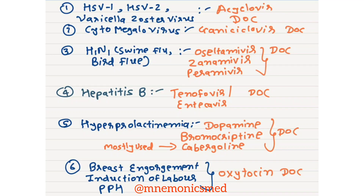For Cytomegalovirus, drug of choice is Ganciclovir. For H1N1 swine flu and bird flu, drug of choice is Oseltamivir, Zanamivir, or Peramivir. For Hepatitis B, drug of choice is Tenofovir or Entecavir.